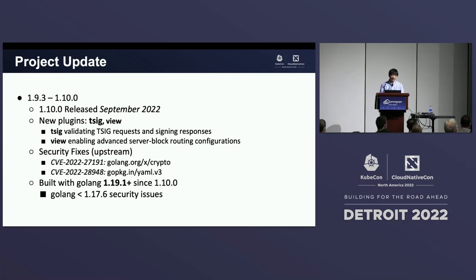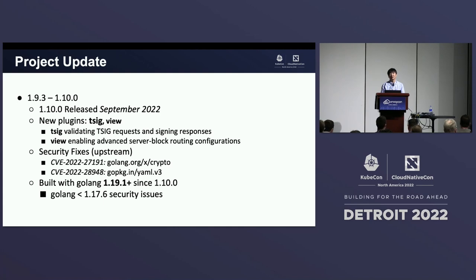This is a CoreDNS project update since last KubeCon earlier this year. There have been several releases from 1.9.3 to 1.10.0. The latest release is 1.10.0, released last month. There are several plugins that have been added. TSIG and Veil are both interesting plugins, especially Veil. The Veil plugin is a highly sought-after feature requested by many community members. It is a feature supported by other DNS servers, and finally in CoreDNS we are able to bring this feature into the default plugin set.